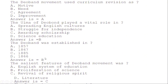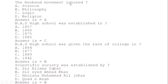Deoband was established in: correct option B — 1867. The salient features of the Deoband movement: correct option C — revival of religious spirit. The Deoband movement ignored: correct option A — science.